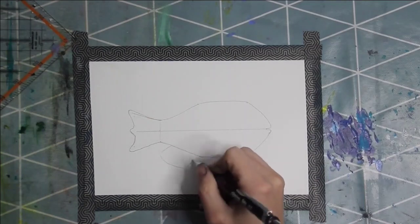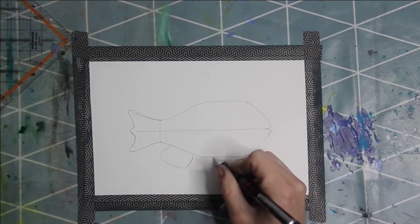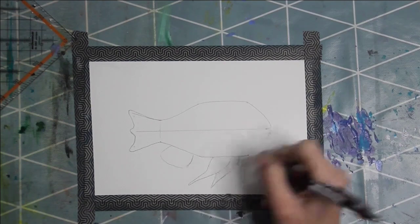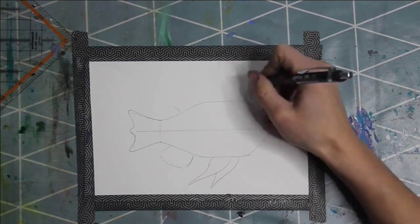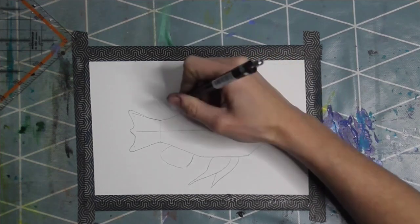Then sketch the fin. As a next step you sketch the fins under the body and on the top of the body. When you draw the fin above the body, imagine that you draw a punk hairstyle in a cartoony way.